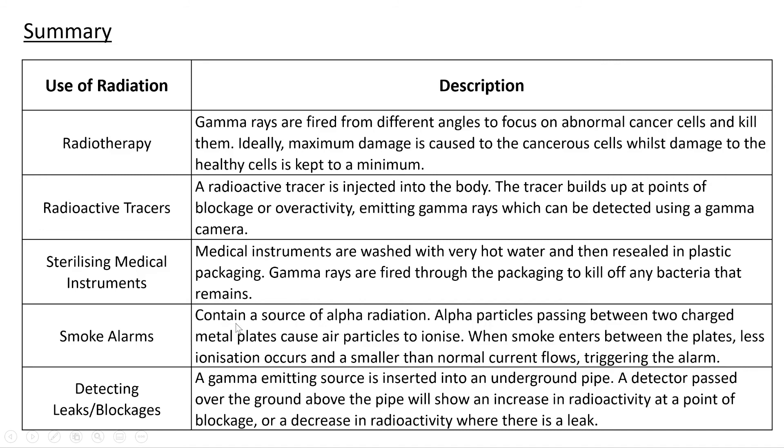Smoke alarms contain a source of alpha radiation. Alpha particles passing between two charged metal plates cause air particles to ionize. When smoke enters between the plates, less ionization occurs and a smaller than normal current flows, triggering the alarm. Detecting leaks or blockages: a gamma emitting source is inserted into an underground pipe. A detector passed over the ground above the pipe will show an increase in radioactivity at a point of blockage or a decrease in radioactivity where there is a leak.